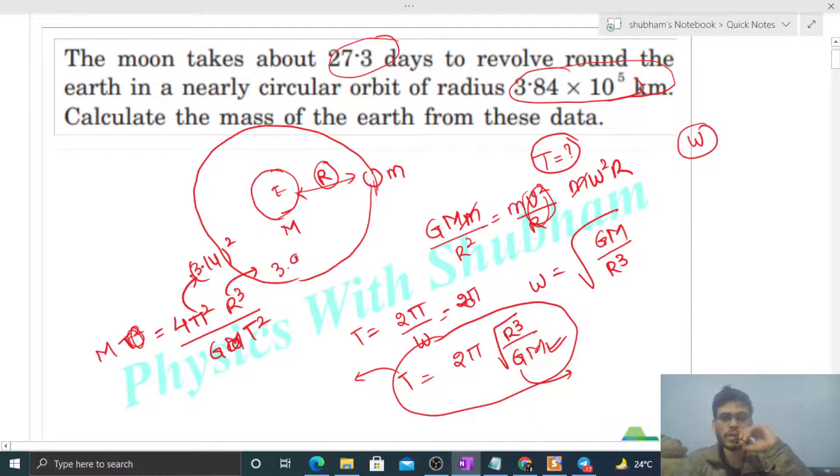Now pi value is 3.14 squared, r value is 3.84 × 10⁸ cubed - you have to convert to meters - and G value is 6.67 × 10⁻¹¹. Time period is 27.3 days, so multiply by 24 for hours, by 60 for minutes, by 60 for seconds, then square it.